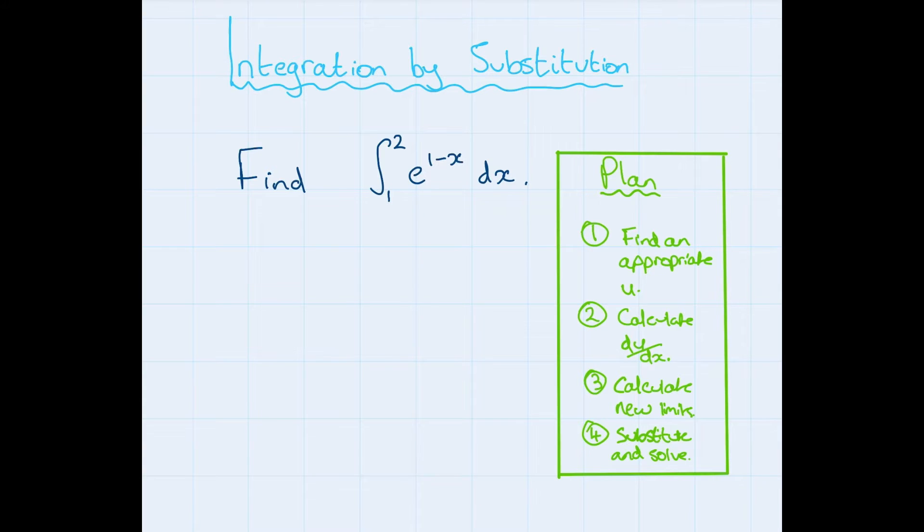So integration by substitution. What we do with this method is change the variable we are integrating over, and usually this helps to make the integration method easier. Now I've chosen this fairly easy example to illustrate the method in full, but this can be used on a wide range of examples.